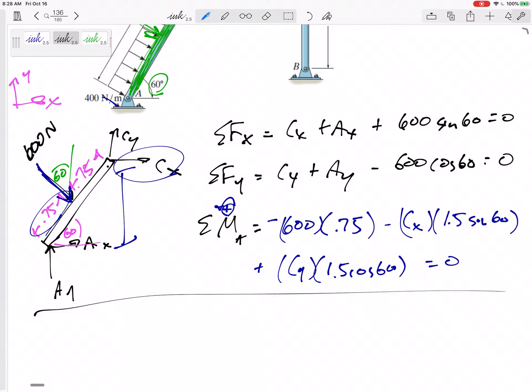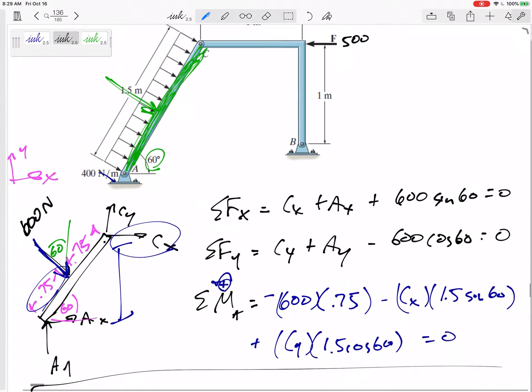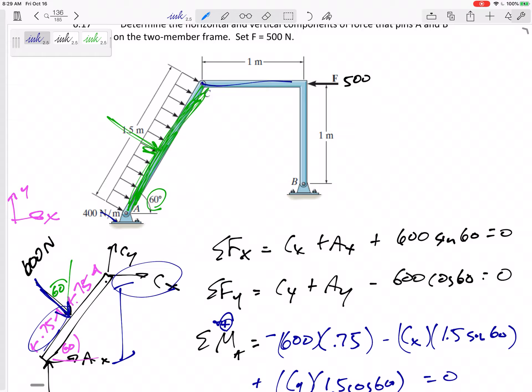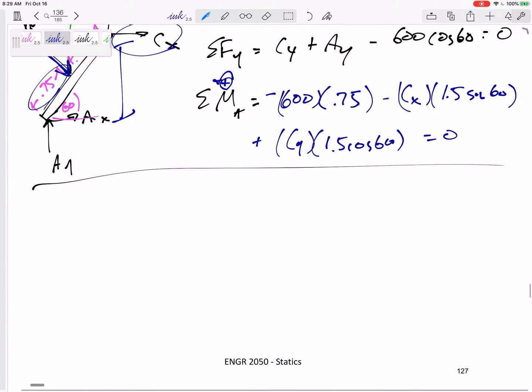All right. I can't solve right away. I just wrote three equations that have four unknowns. There's not one equation that only has one unknown. There's not two equations that have two unknowns. I can't solve right away. So let me jump to my next free body diagram. Let's look at this bar CB.